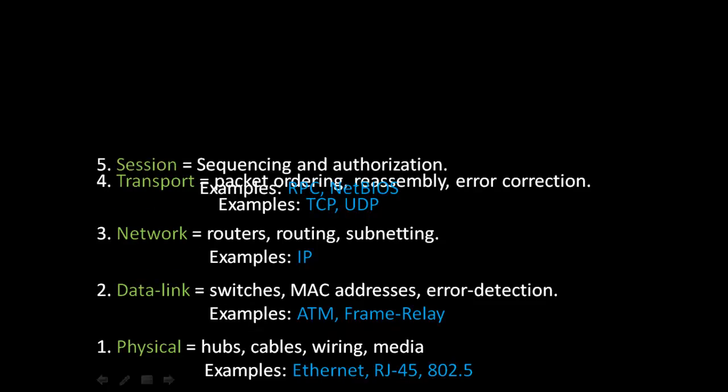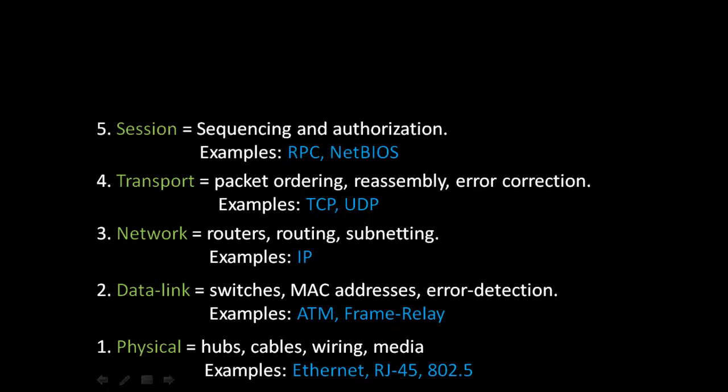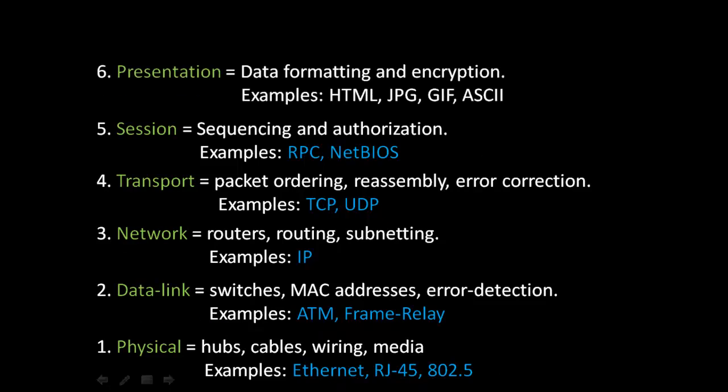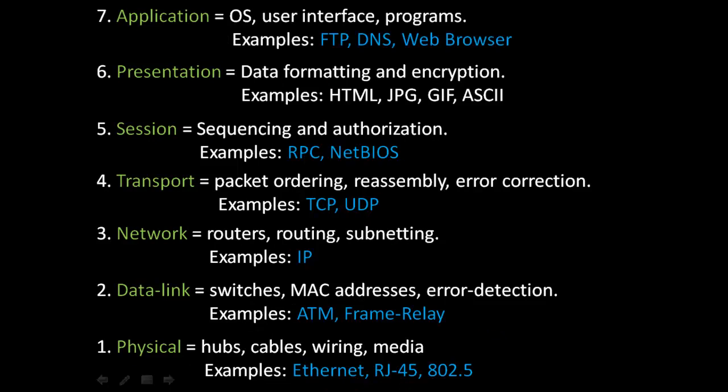Next is the fifth layer, the session layer, where sequencing and authorization occur. Examples would be RPC and NetBIOS. The sixth layer is the presentation layer, where data formatting and encryption happen. Examples would be HTML, JPEG, GIF, and ASCII formatting. Finally, the seventh layer, the application layer, is where operating systems, user interfaces, and programs operate. Examples would be FTP, DNS, and a web browser.